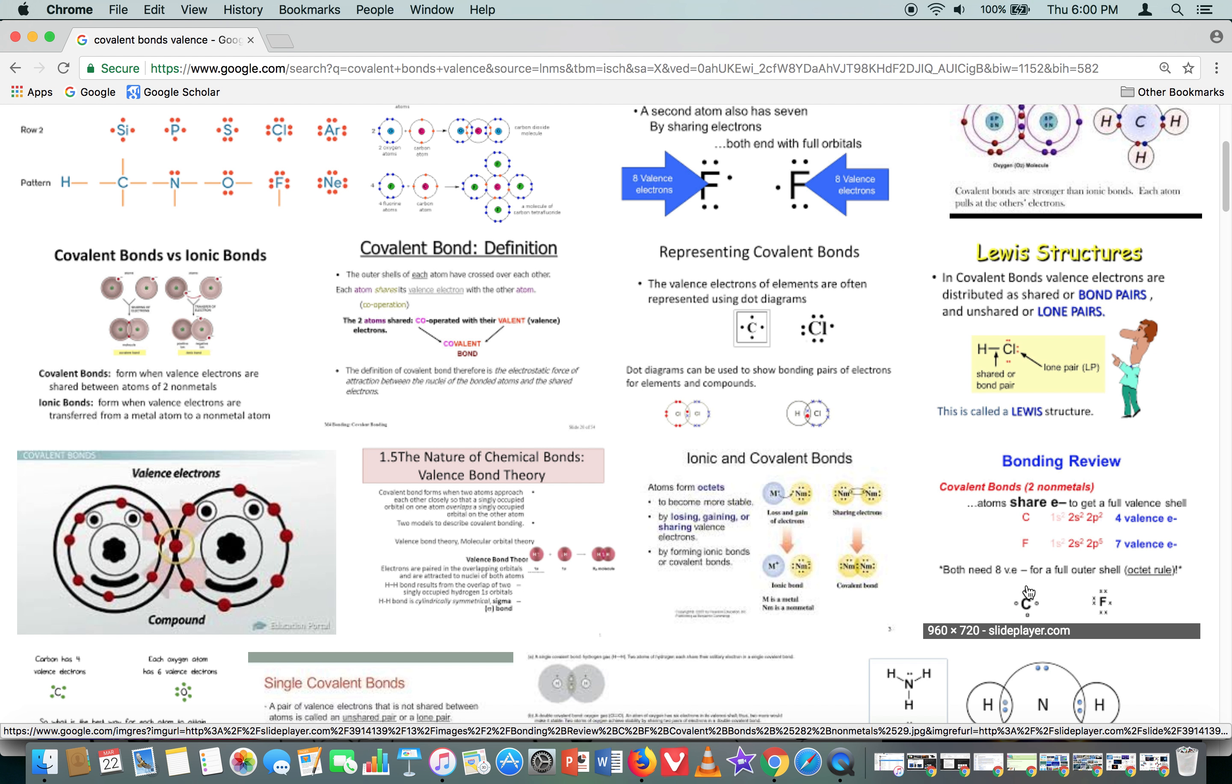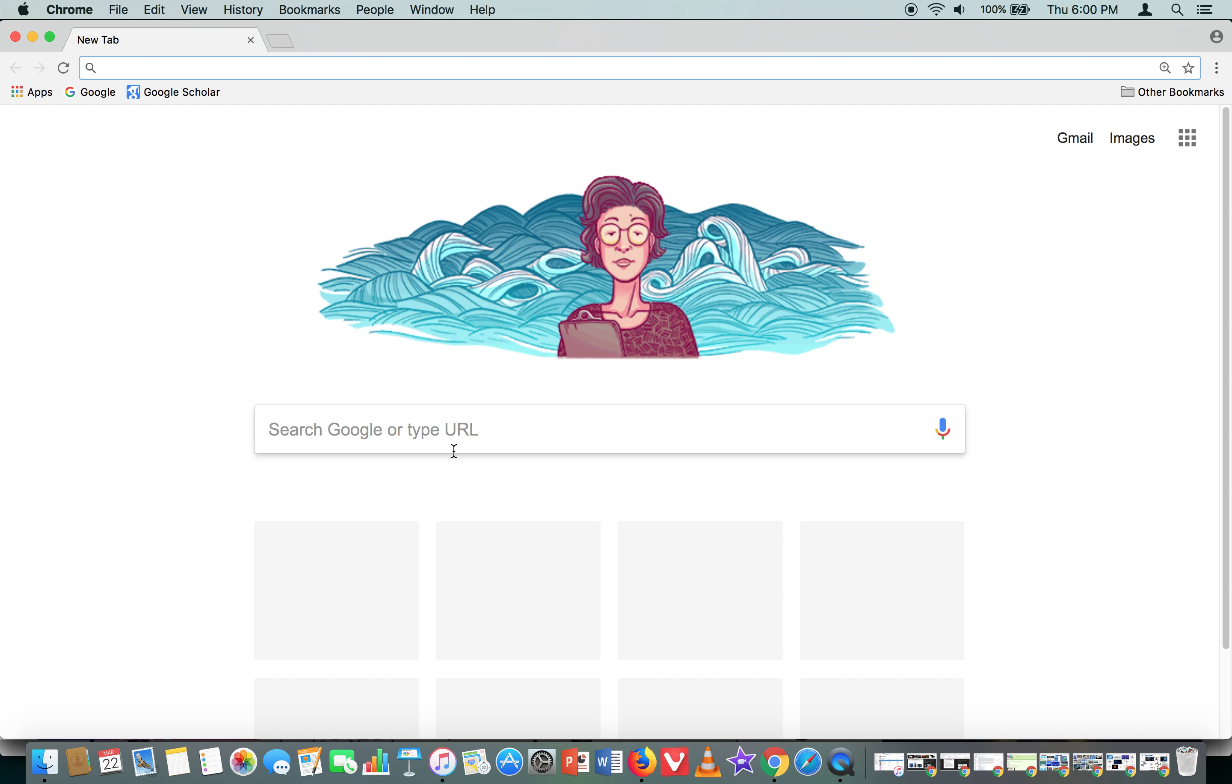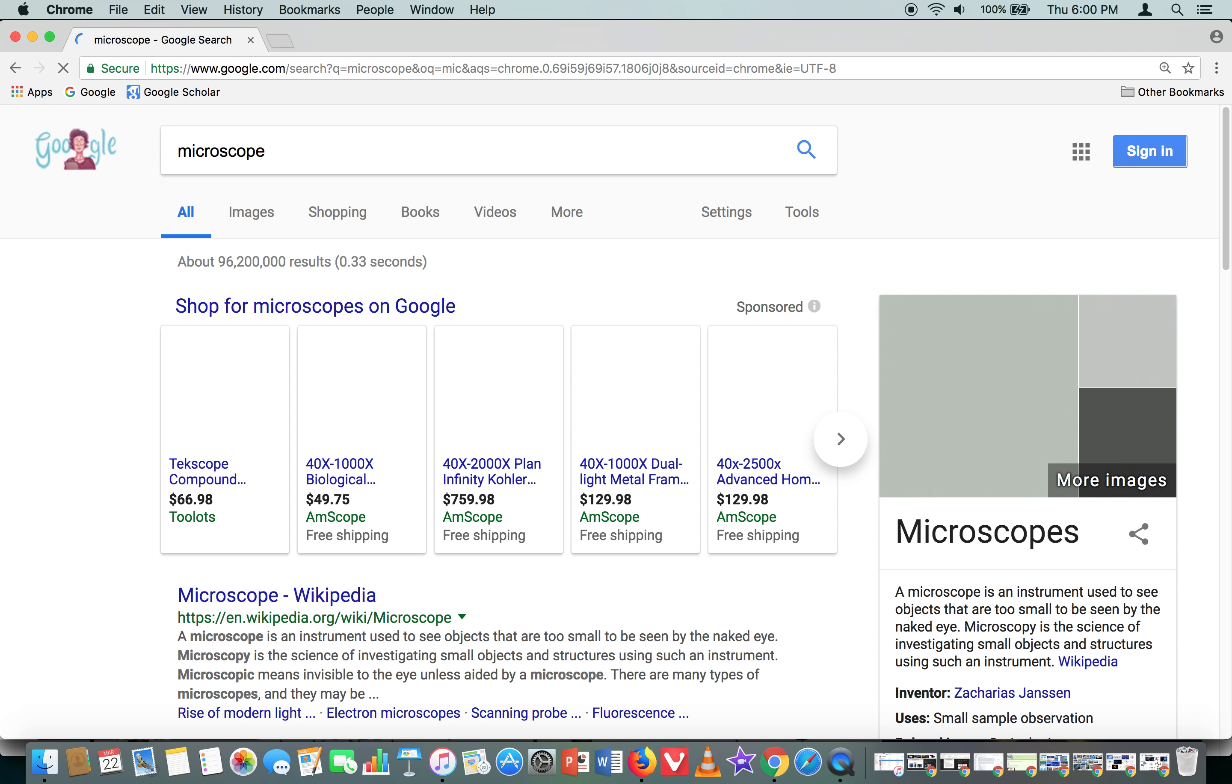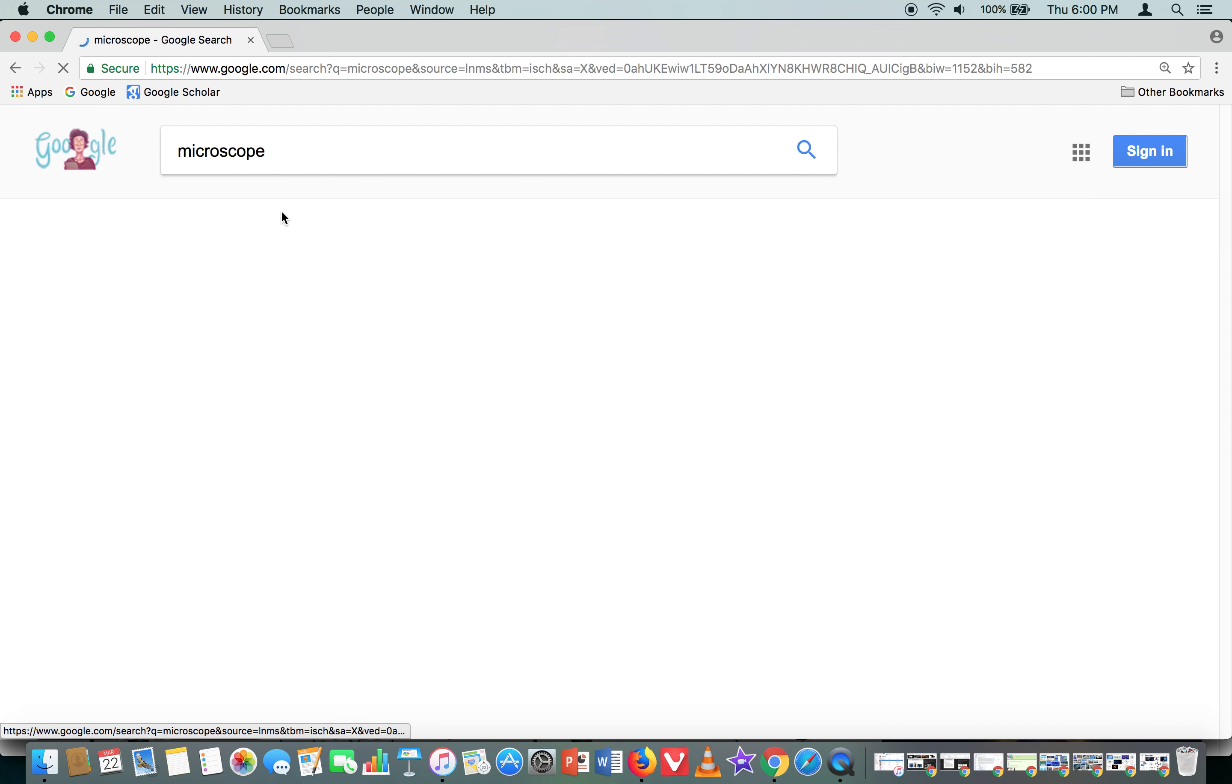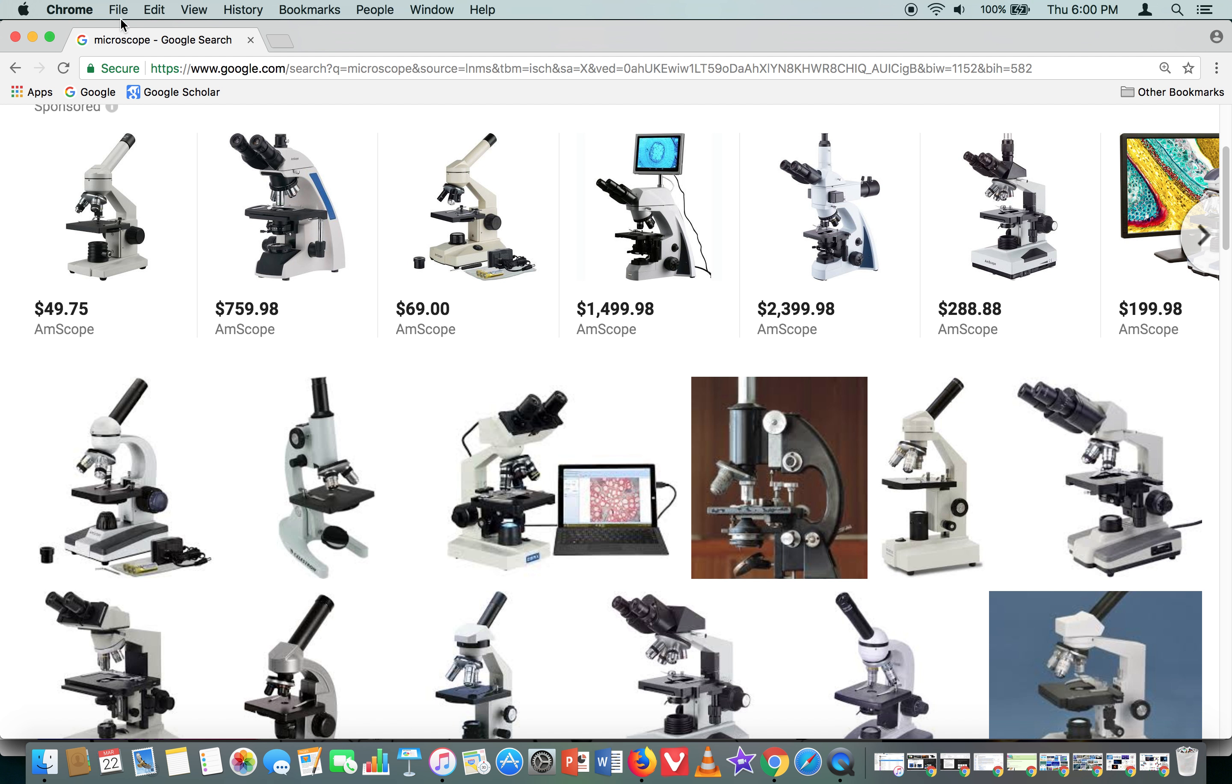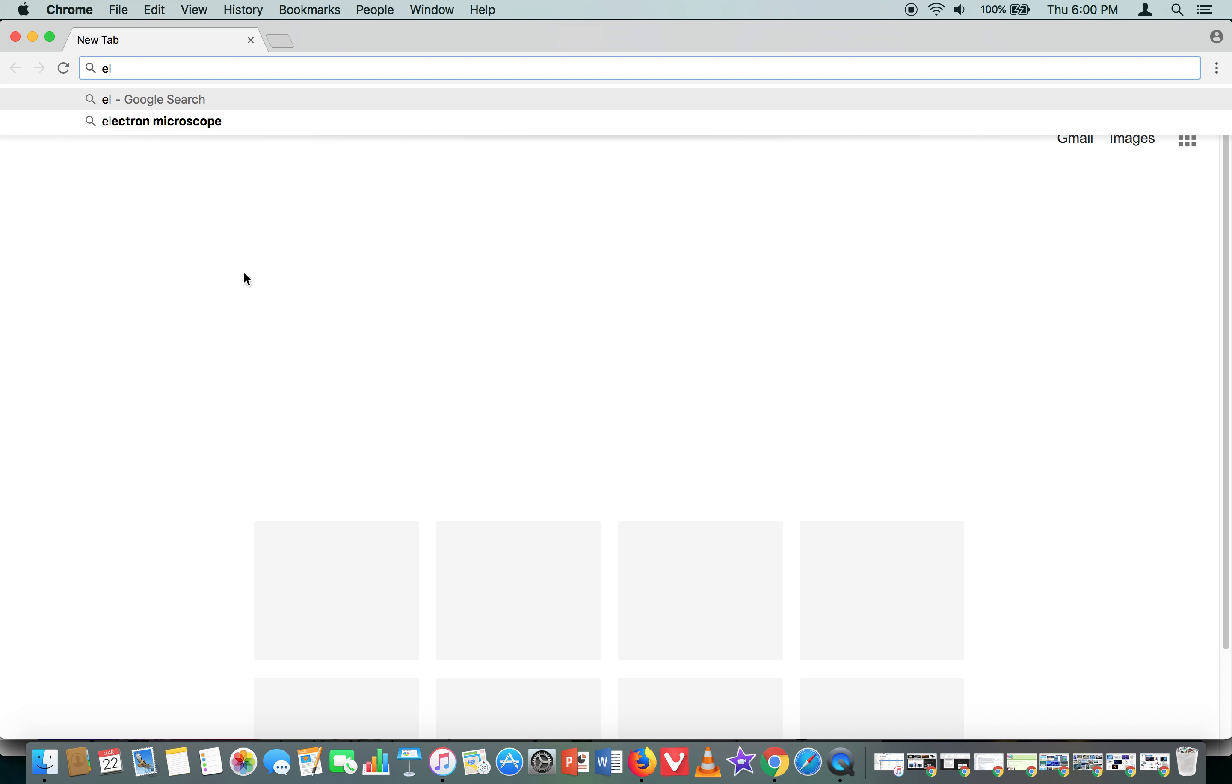And they use microscopes to see this. This is how they learned about it. They looked under microscopes, but first they looked under the earlier types of microscopes, and then they developed these fabulous microscopes that can look even smaller called electron microscopes.